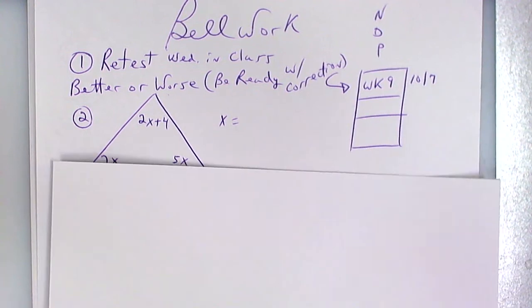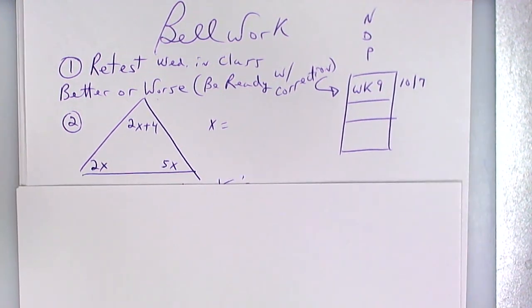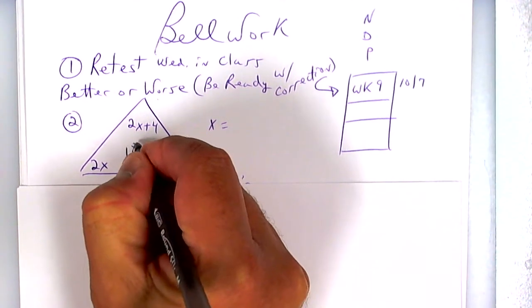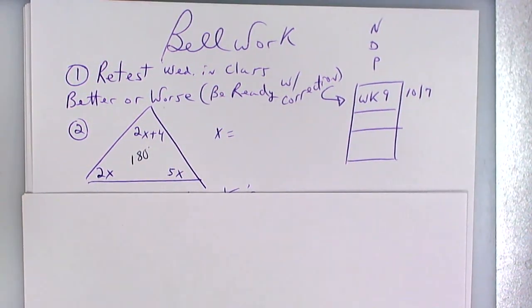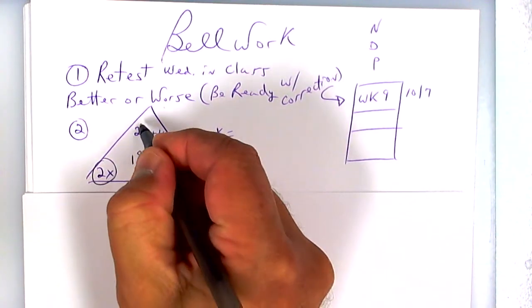Let's take a look here. Every triangle adds up to 180 degrees by something called the triangle sum theorem. Say that to yourself: triangle sum theorem. So you're going to add this up: 2x and 2x is 4, plus 5 more makes 9x plus 4 equals 180 degrees.